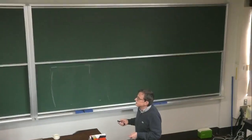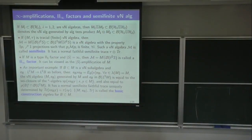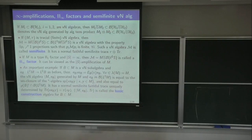That's the II∞ factor. And there is an important example of semi-finite von Neumann algebras — the so-called basic construction — which I want to quickly construct here. We'll work with this a lot in the next lectures.